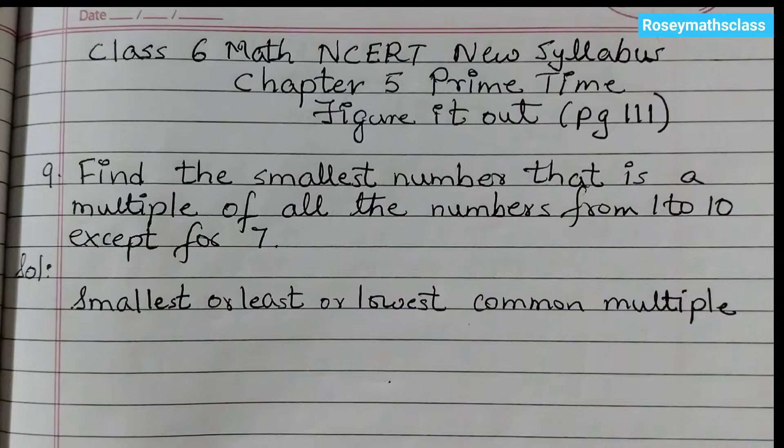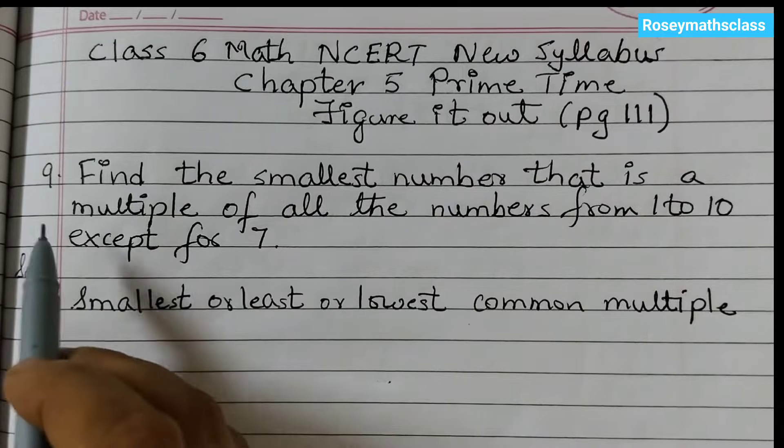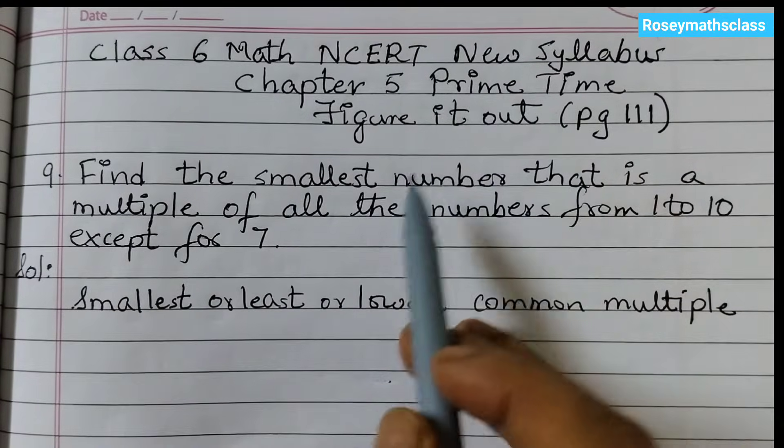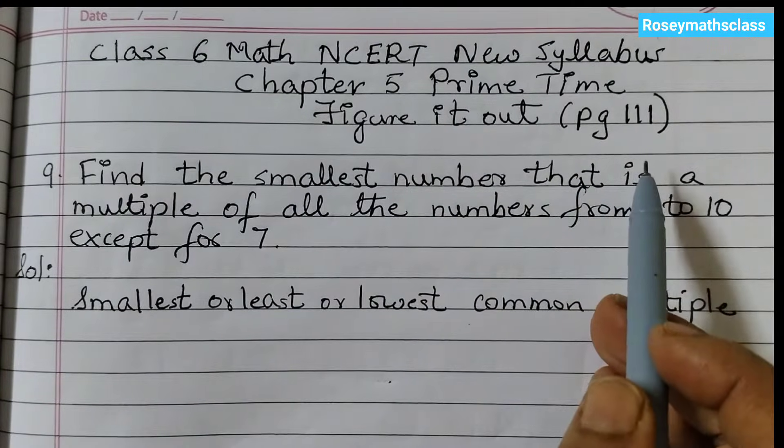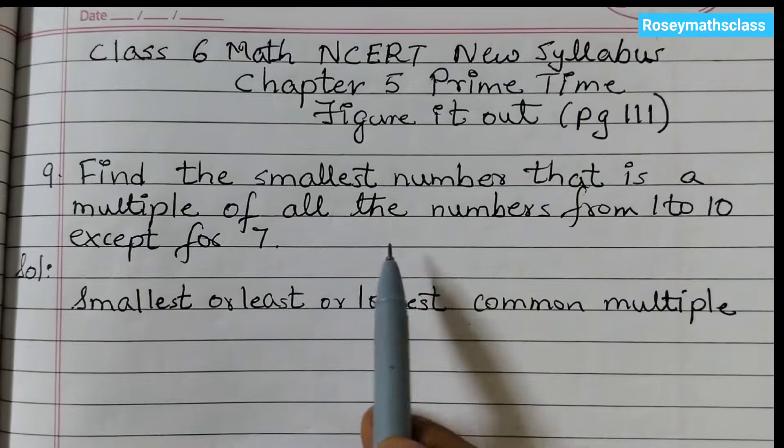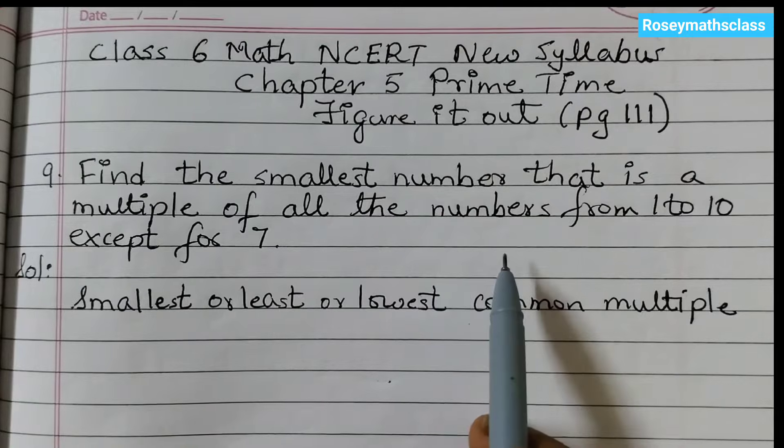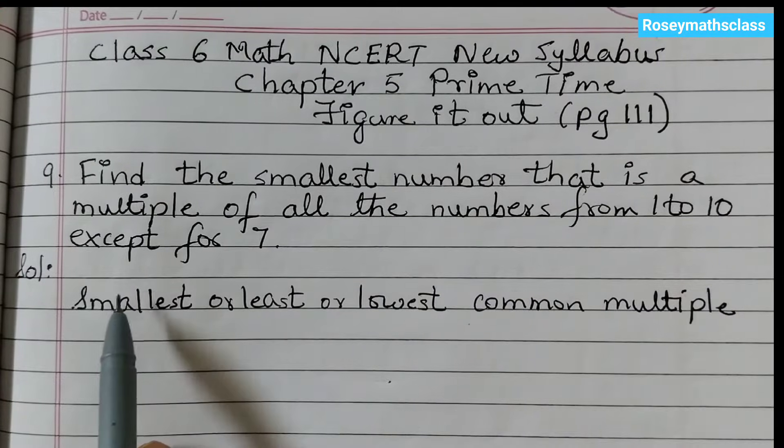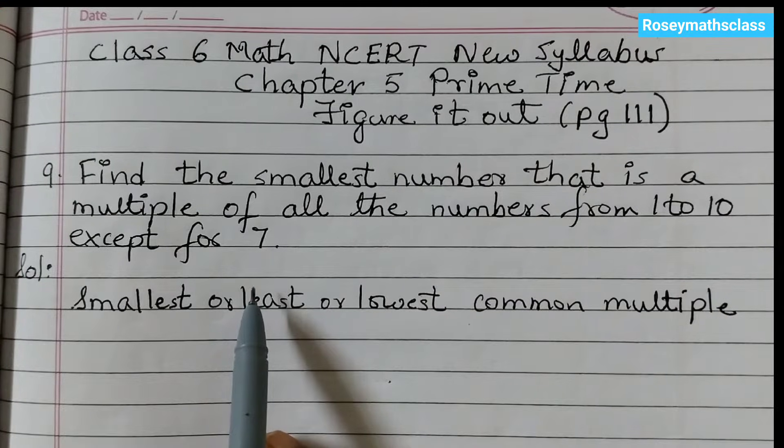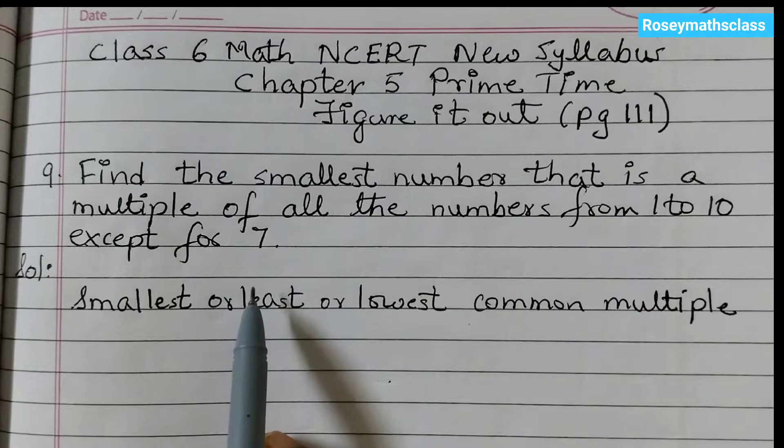Hello students, welcome back to Rosie Maths class. Today we shall discuss question number 9 of chapter 5 Prime Time, figure it out page number 111. Find the smallest number that is a multiple of all the numbers from 1 to 10 except for 7. We have already learned how to find the multiples and the common multiples.